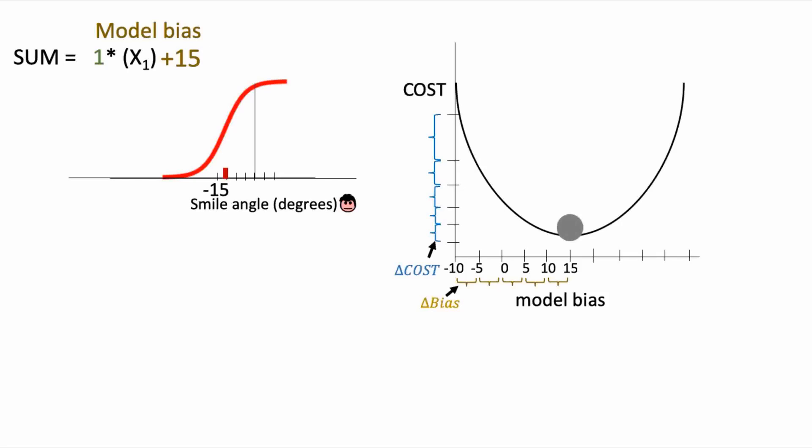We can see that learning means finding parameter values for our weights and bias to minimize this cost. In our example, cost was the average squared errors, but there can be other mathematical formulations — it always describes some form of difference between what our model is currently outputting and what we want our model to output.